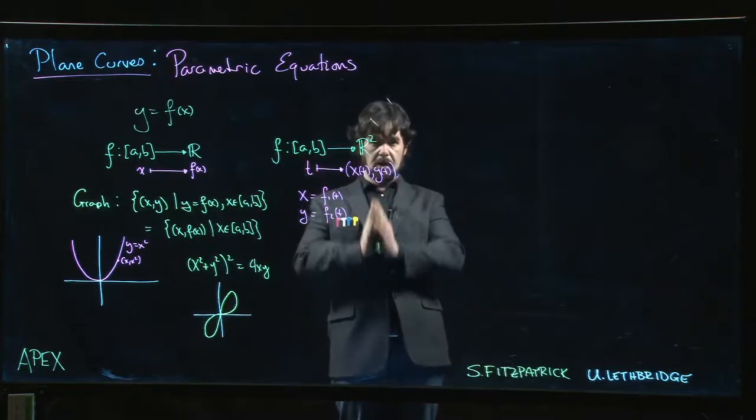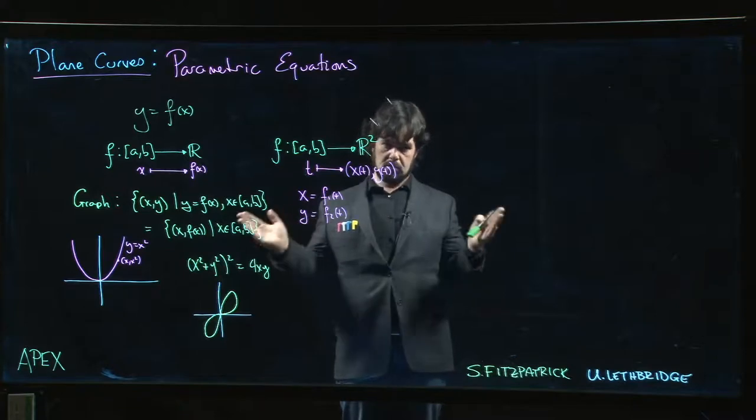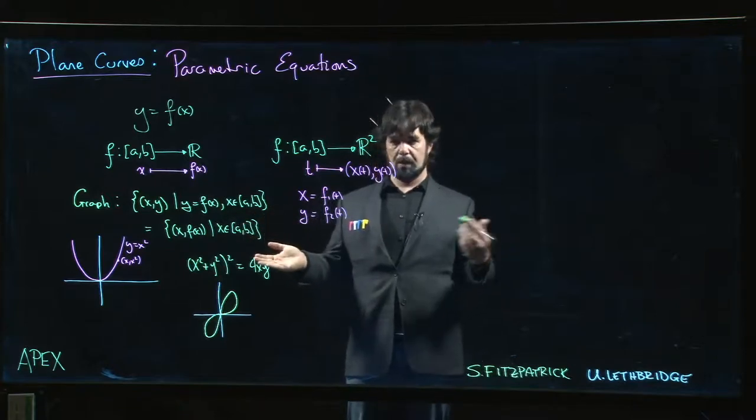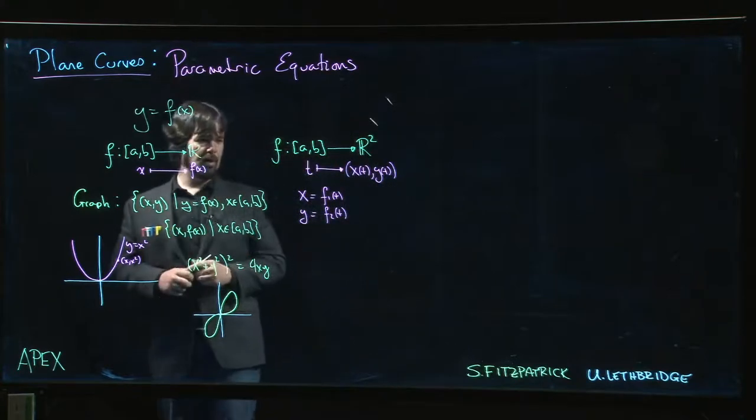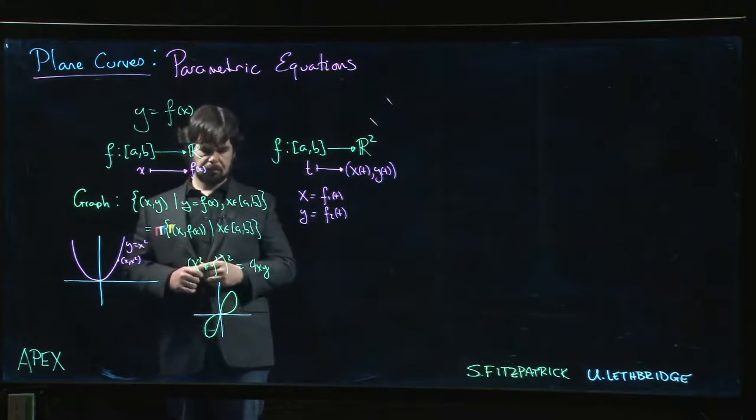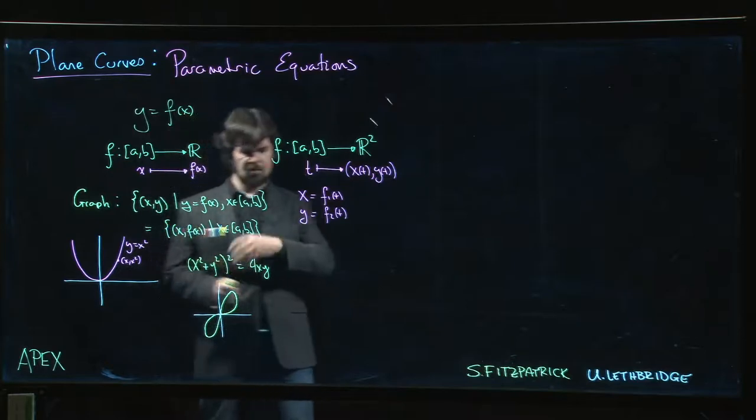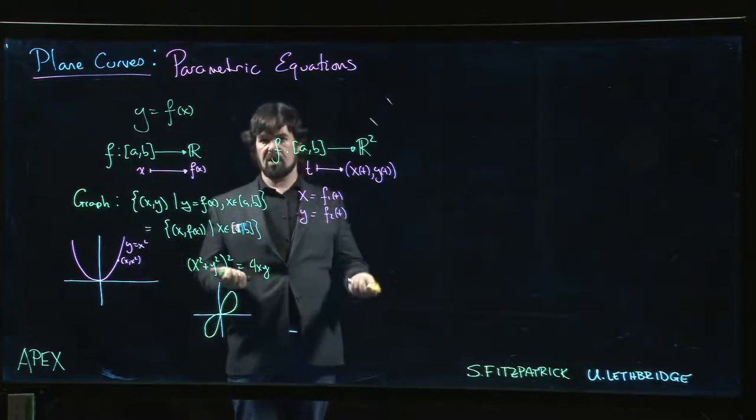So the computer takes a bunch of samples, evaluates on these two functions, gets the numbers out, shoves the numbers into an ordered pair, plots the point. So if we do that for like a hundred samples, we get a pretty good idea of what the curve looks like. So computers are really good at plotting parametric curves. You'll see parametric curves quite a bit when you're working with software and you're trying to plot things.